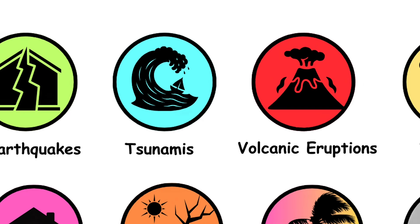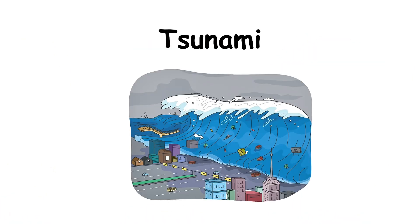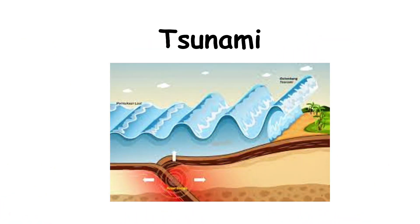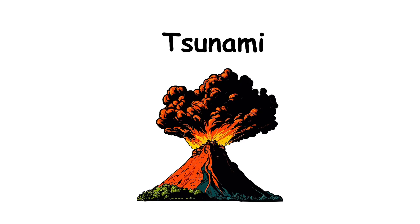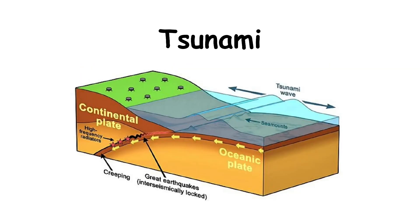Tsunamis. A tsunami is a series of powerful ocean waves, usually caused by undersea earthquakes, volcanic eruptions, or landslides. When the seafloor suddenly shifts, it displaces a massive amount of water, creating waves that can travel across entire oceans.